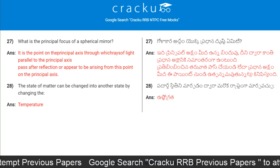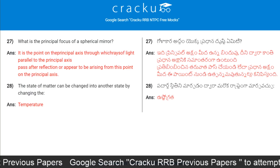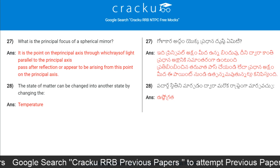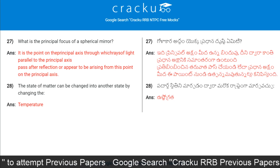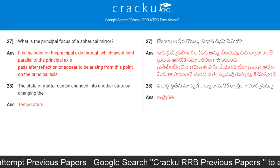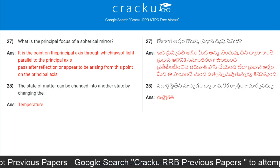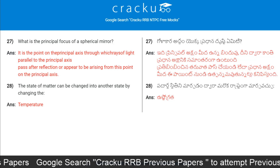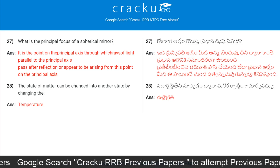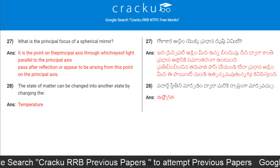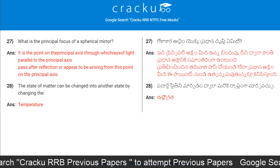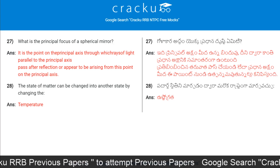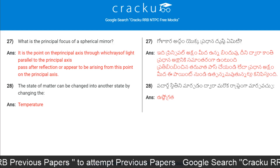What is the principal focus of a spherical mirror? It is a point on the principal axis through which rays of light parallel to the principal axis pass after reflection, or appear to be arising from this point on the principal axis.